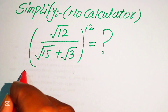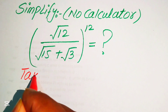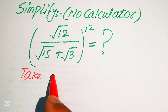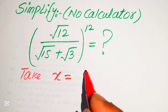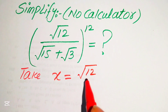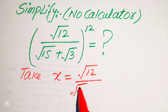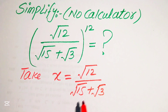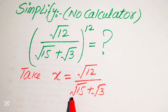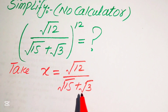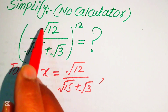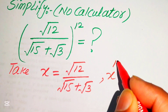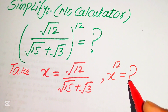The very first step is to let the base of this expression equal x. So our base is: x = √12 / (√15 + √3). We first need to simplify x, and after setting the base equal to x, we need to find the value of x to the power of 12.